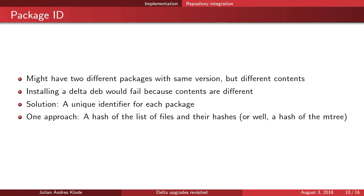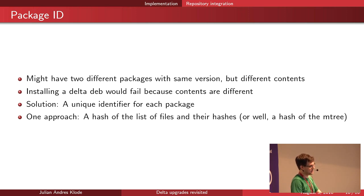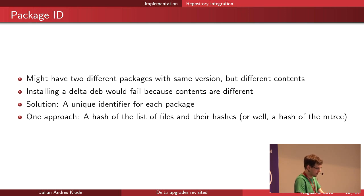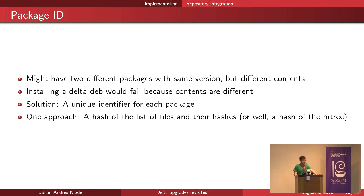There's another problem with deltas: because we install deltas directly to the filesystem, we need to make sure the files on the system are actually the files we expect. My idea is to introduce a package ID — we hash the list of files and their hashes to get a hash of all contents in the deb. We check whether the files on the system match the expected hash; if they do we fetch the delta, if not we fetch the full deb. Alternatively, we can store the ID in the dpkg database and do the lookup based on the ID. Verifying that files haven't been locally modified is optional but makes sense if you're modifying files in the user partition.